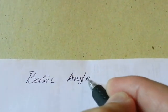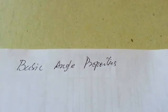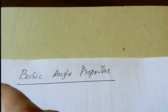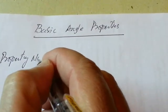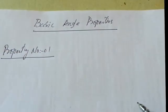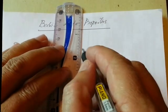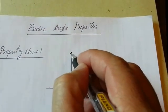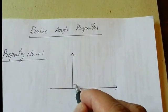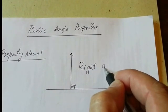Basic Angle Properties. Property 1: a 90-degree angle is called a Right Angle.